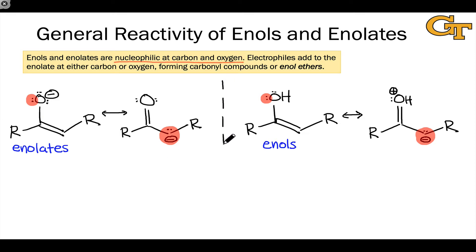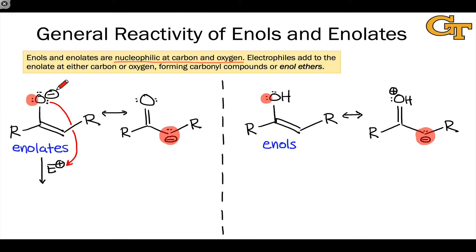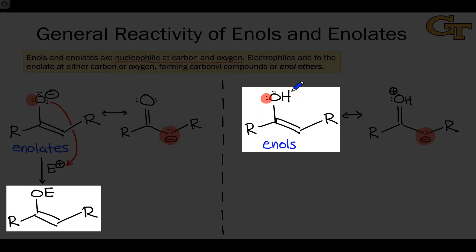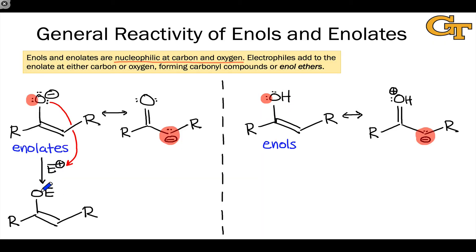This means that when we treat an enolate or an enol with an electrophile, two outcomes are possible. Focusing on the enolate with a generic electrophile E+: oxygen can act as a nucleophile in something like an A_N, S_N2, or AD_N type elementary step. The resulting product contains a new bond between oxygen and the electrophile and retains the double bond from the original enolate. This product looks like an enol in which E replaces hydrogen, but also like an ether because we have an oxygen linked to two groups. For this reason, it's called an enol ether.